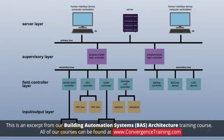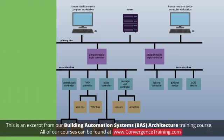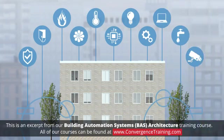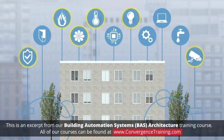A BAS is a collection of computers, controllers, sensors, and actuators that are all electrically connected together in a network. Building automation systems typically control the heating, cooling, and ventilation equipment in a building, although some systems also have the ability to control lighting, fire safety, and security systems.